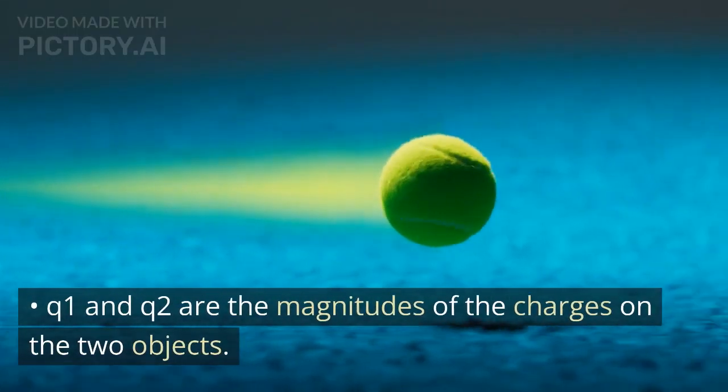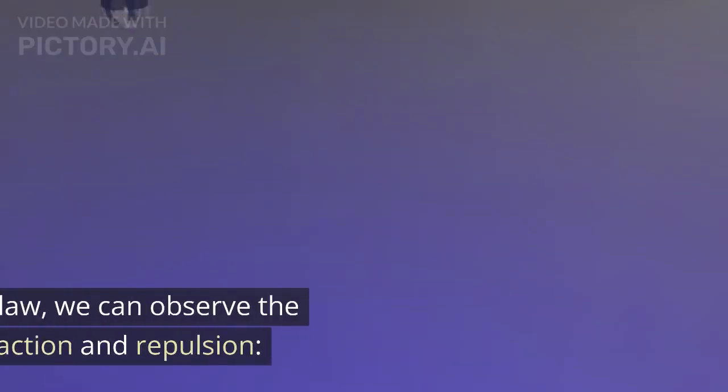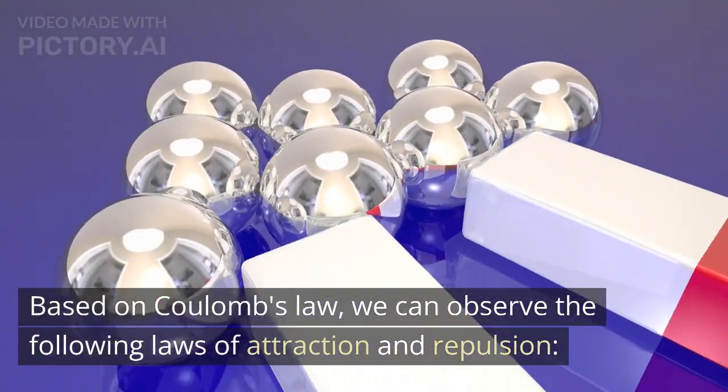Q1 and Q2 are the magnitudes of the charges on the two objects. R is the distance between the centers of the two objects. Based on Coulomb's law, we can observe the following laws of attraction and repulsion.